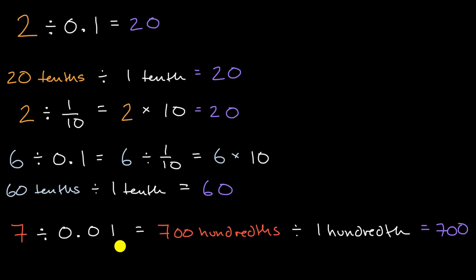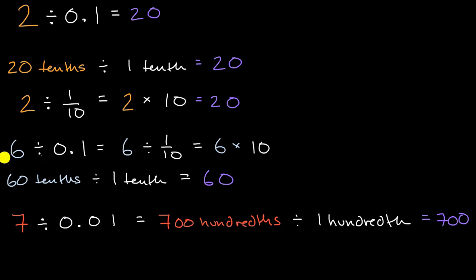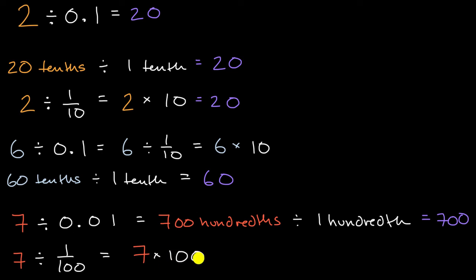Dividing by a hundredth is the same thing as multiplying by 100. You can also rewrite this as a fraction: seven divided by one hundredth equals seven times 100 over one, or seven times 100, which again gives you 700. So the general pattern is: divide by a tenth, same thing as multiplying by 10; divide by a hundredth, same thing as multiplying by 100.